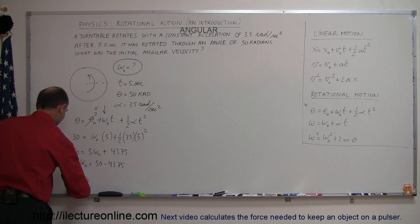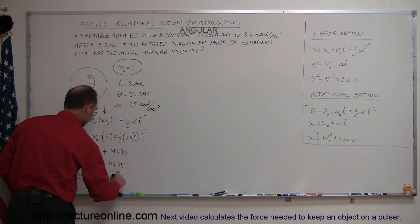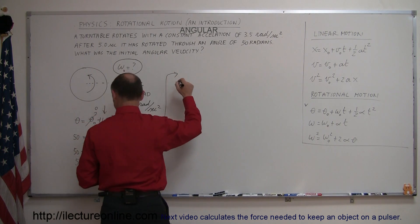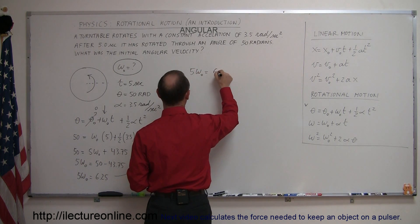So we have 5 omega sub naught equals 50 minus that, which gives us 6.25. So now let's move over here.